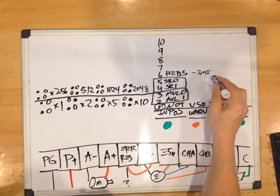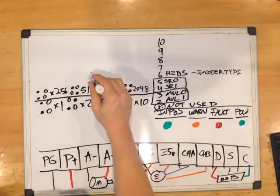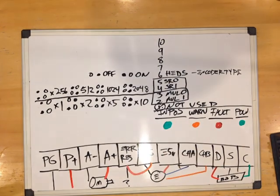Number 6 is the head switch. This is if you have an optical encoder, heads encoder, you want this on. It's defaulted to off.